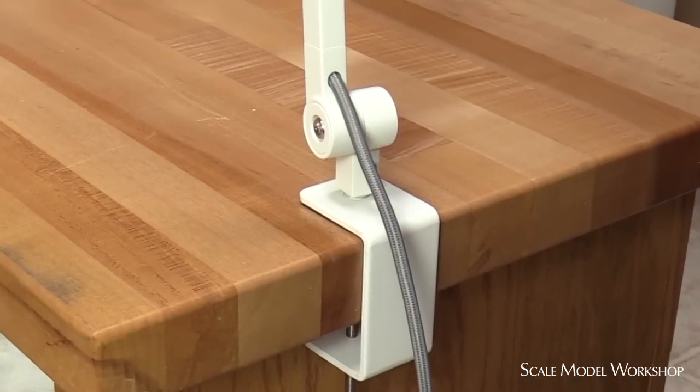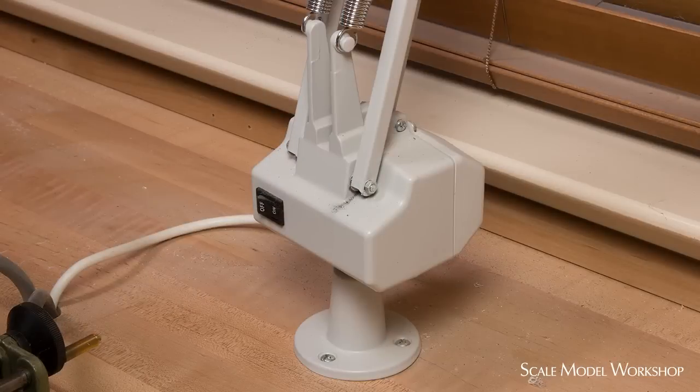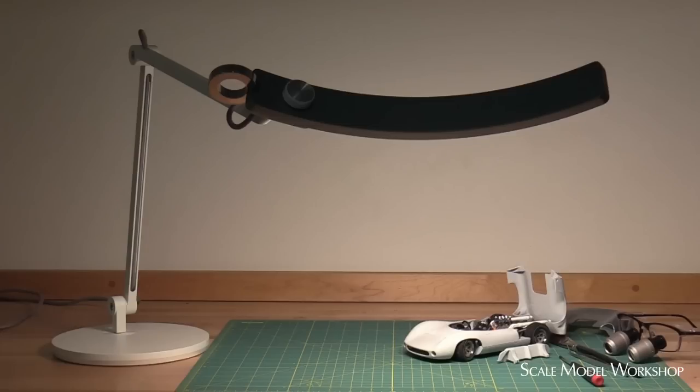The base of the arm occupies much less space than a conventional task light. The curved shape of the light allows it to deliver an even amount of light over a fairly broad area, with better fall-off towards the darker outside edges.